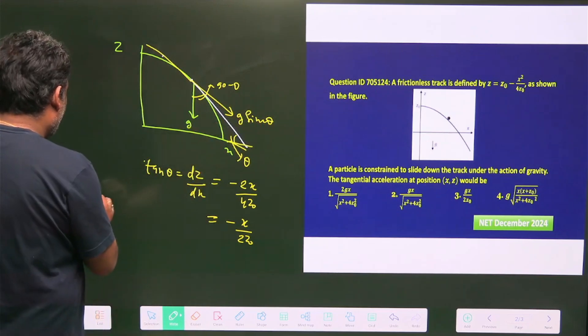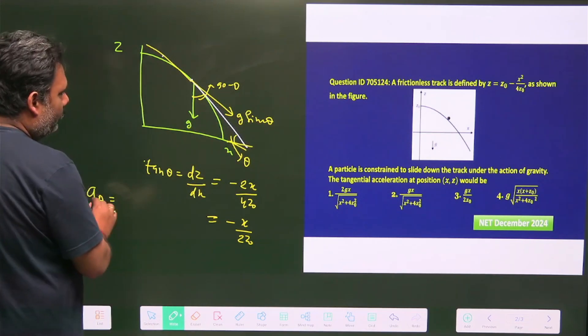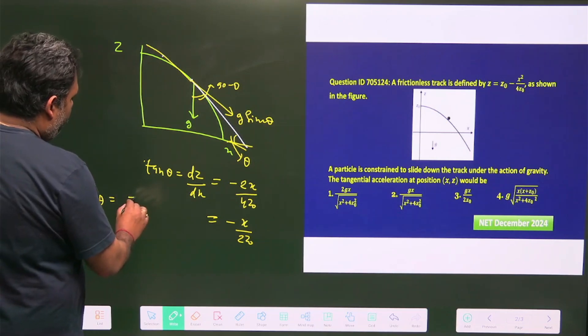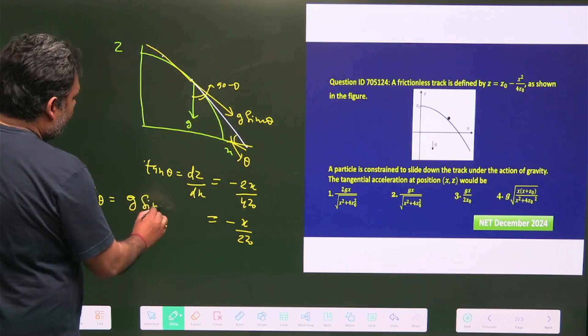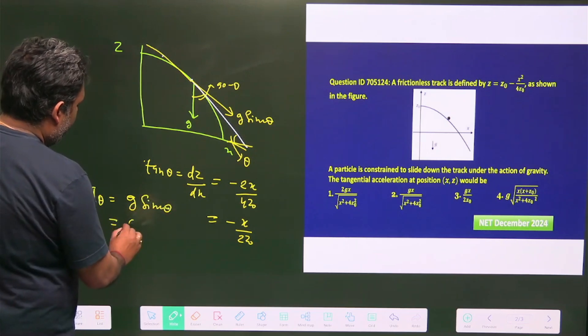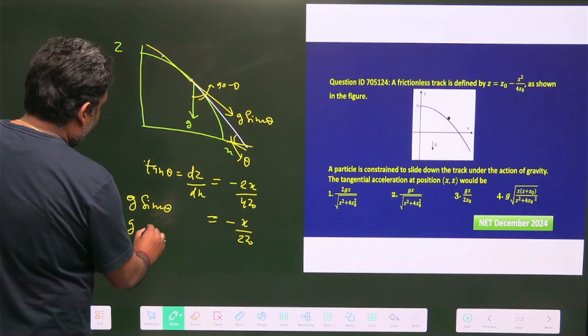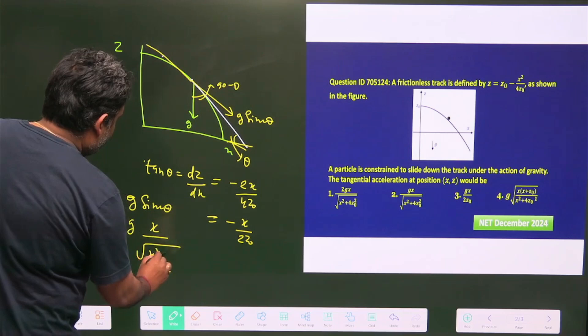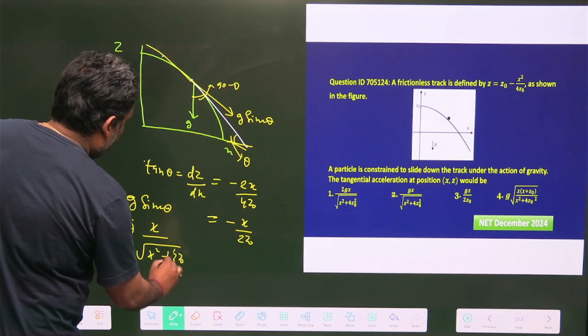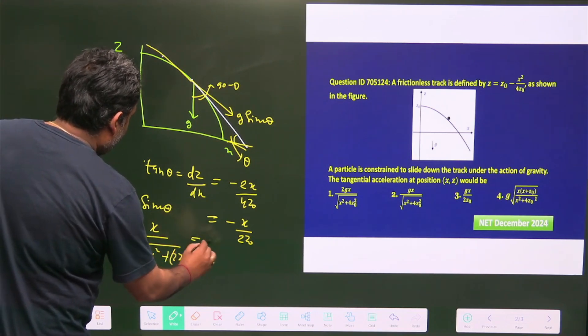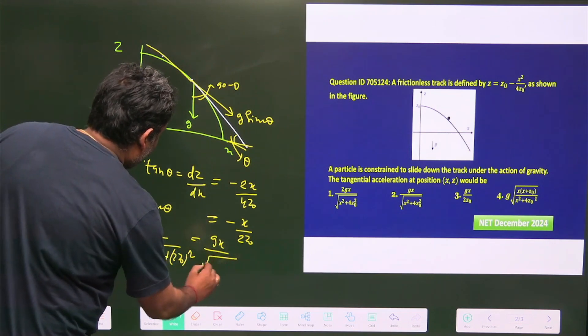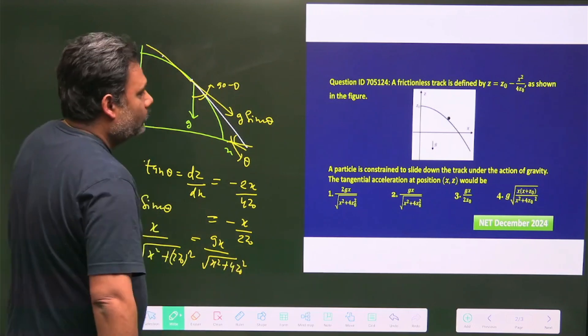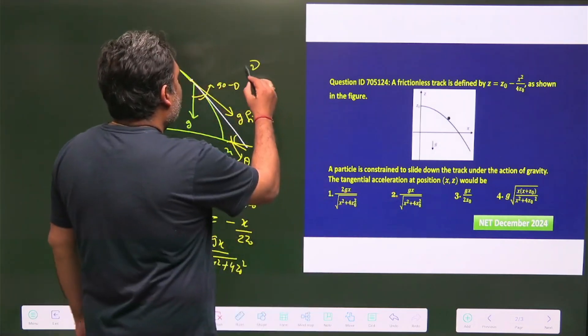So basically we have to calculate the value of theta, and if we know the tan theta we can easily find sin theta. So what will be a tangential? That value is equal to g sin theta, and g sin theta is nothing but x upon root under x square plus 2z0 whole square. This value is equal to gx upon root under x square plus 4z0 square, so your answer is 2, so option 2 is correct.